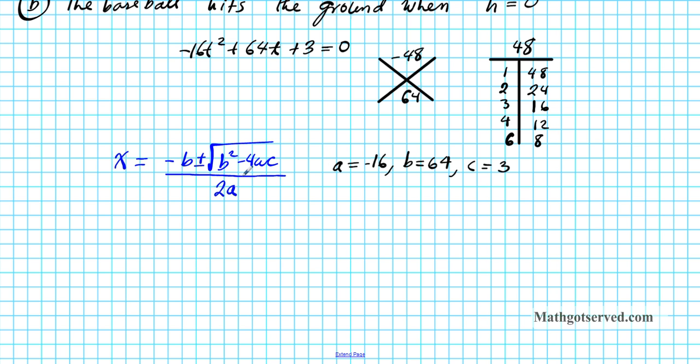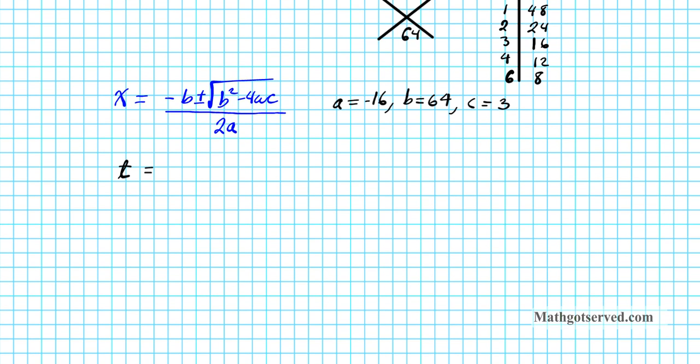So we're going to plug in all these values into the quadratic equation. Now the variable, our independent variable is time, so t is going to take the position or take the place of x. So we have t equals negative 64 plus or minus the square root of b squared is 64 squared minus 4A, negative 16, C, 3, and this entire expression divided by 2A, which is 2 times negative 16.